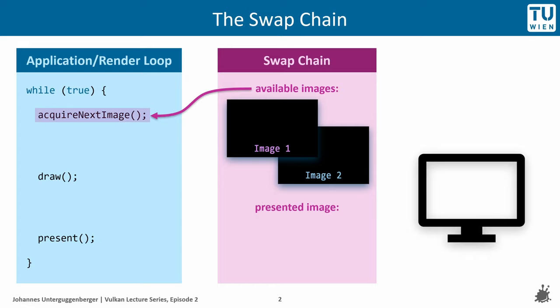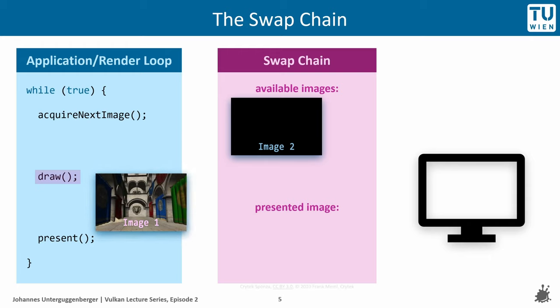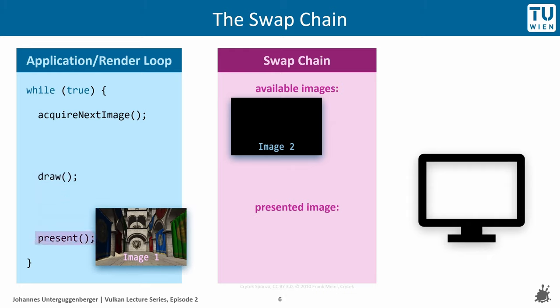In our application, we start by acquiring the next available image from the SwapChain. The SwapChain provides the next available image to our application, and our application starts drawing into that image. After our scene has been completely rendered into the image, we hand it back to the SwapChain. We have reserved it in our application for some time, and now we are done rendering into it and hand the very same, but still SwapChain-managed, image back to the SwapChain.